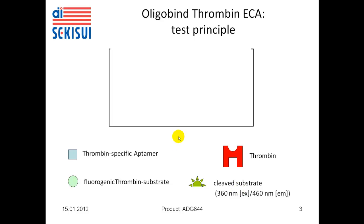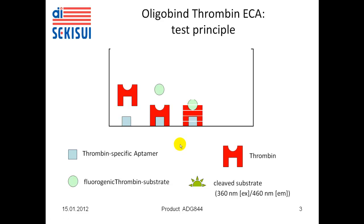The assay is based on the conventional 96-well microtiter format. The thrombin-specific aptamer is bound to the microtiter plate. Active thrombin in the sample is captured by the aptamer, and the fluorogenic thrombin substrate is added, bound, and converted into a fluorescent product. The amount of fluorescent product is measured via fluorescence quantification.